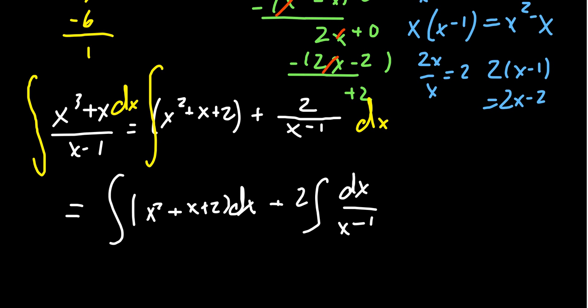This one, just a basic u substitution, saves the day. Take u to be x minus 1. Take du to be just dx. And therefore, this integral has the form, the integral of du over u. Its antiderivative is the natural log of u plus a constant. Don't forget the absolute value as well.